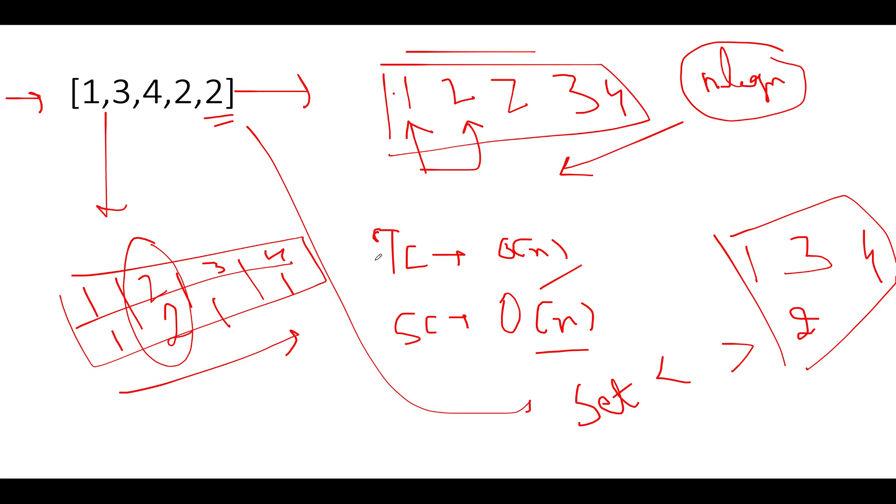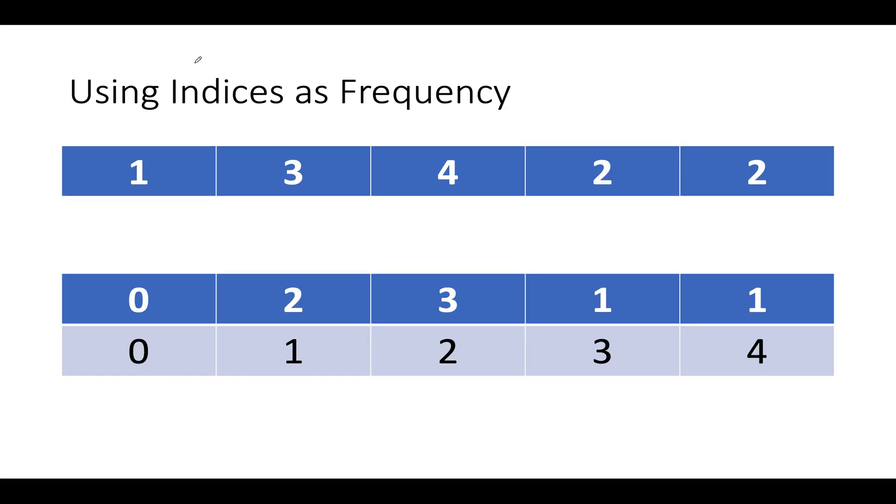Now let's talk about the third approach where the time complexity would be order of n and space complexity would be constant time. Also, we are taking an exception here to what was specified in the question. We will be modifying the input array. To understand it better, let's get through the example. So we have the input array as 1, 3, 4, 2, 2. And here in this approach, we will be exploiting indexes as frequencies. So let's get started. In the first go, what will I do? I will simply reduce each and every element by 1 so that the elements lie within the range of 0 till n minus 1. The indexes and the values come in parity with each other. Now let's start the iteration.